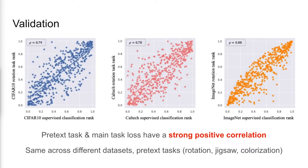We discovered that the loss rankings of the pretext task and main task have a strong positive correlation which validates our hypothesis. This correlation is the same across different datasets and pretext tasks.